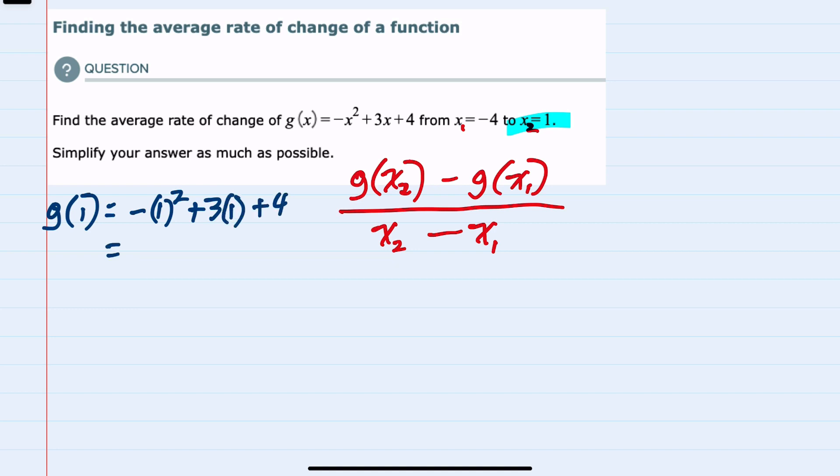Doing exponents first, that's negative 1. Notice that the negative is not being squared. 3 times 1 is 3, plus 4, so g(1) is 6.